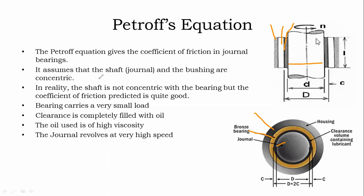Petrov's equation assumes that the shaft, journal, and bushings are concentric — which means the housing, journal, and shaft all share the same center. That is the first assumption: shaft, journal, and bushings are concentric. But actually in reality, the shaft is not concentric with the bearing.